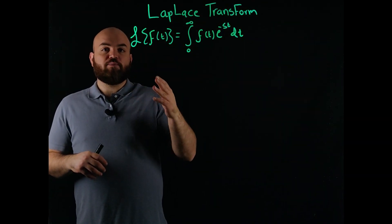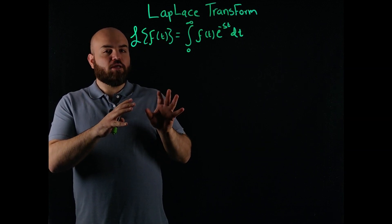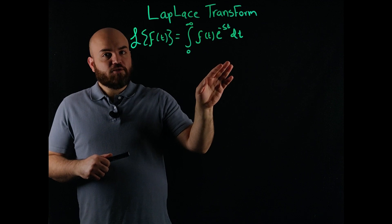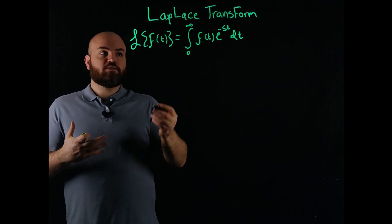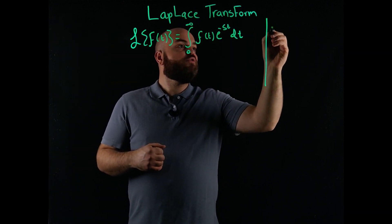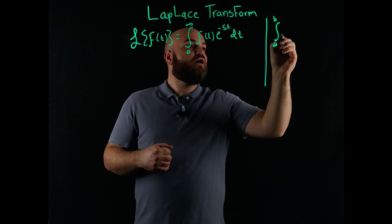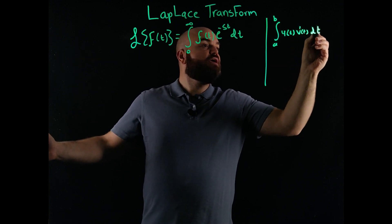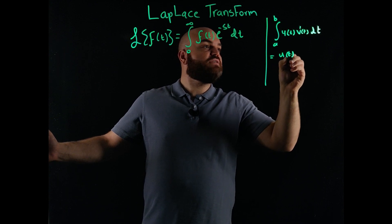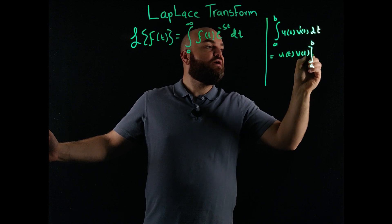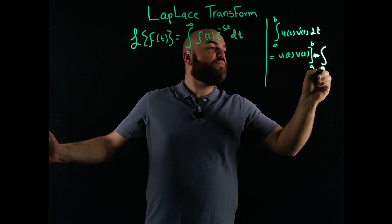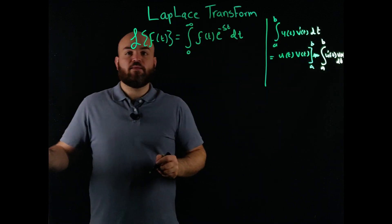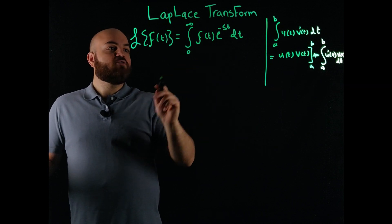Now that we've defined the Laplace transform operator, let's look at this integral more closely. Can I solve this integral? The answer is yes — I can use integration by parts. With integration by parts, if you have the integral from a to b of u of t times v-prime of t dt, you can solve that as u of t times v of t evaluated from a to b, minus the integral from a to b of u-prime of t times v of t dt.